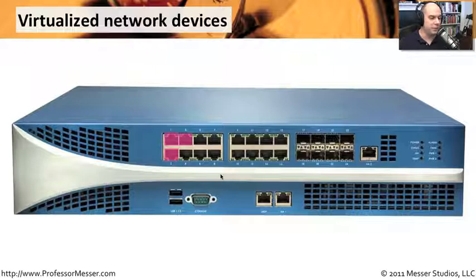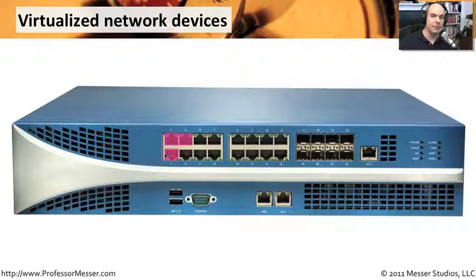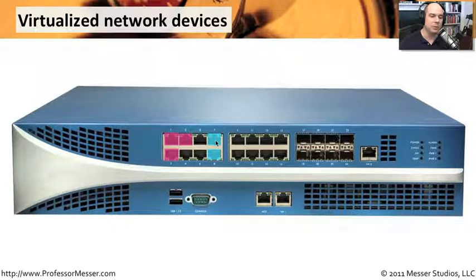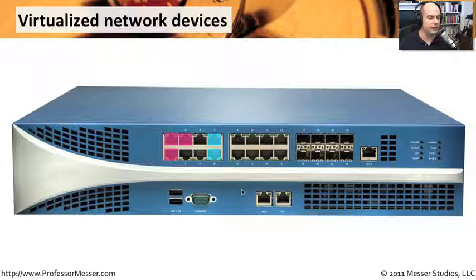You might want to assign ports one, two, and three to be kind of a red network — their own separate virtual firewall. Then you'd essentially build a new firewall inside that for other ports. Ports one, two, and three cannot see ports seven and eight, and vice versa. They are completely separated within the firewall. These are virtual firewall systems.